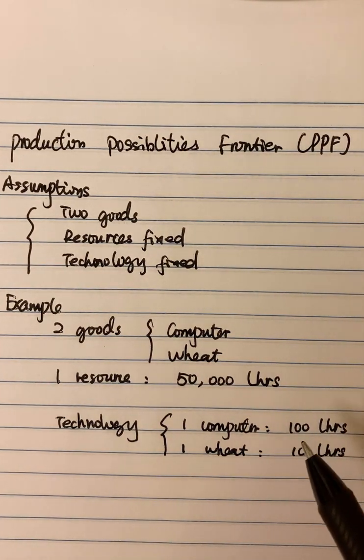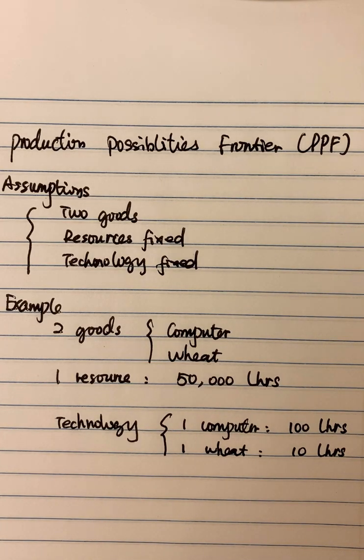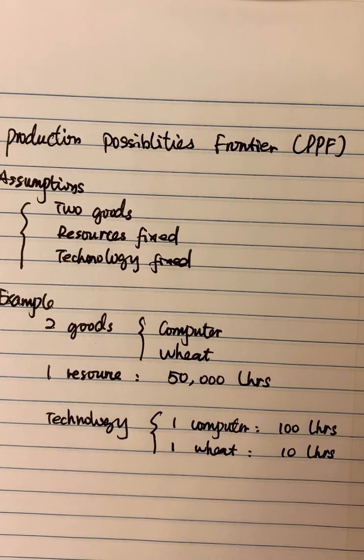And based on this given information, we need to draw a PPF. So how can we draw a PPF? And how can we use the PPF to compute the opportunity cost? So based on this, we assume this PPF now is a straight line. So there is a quick way to draw a PPF. I would like to show you here.